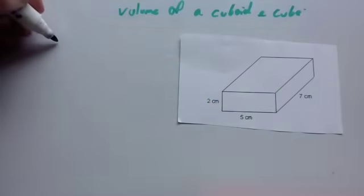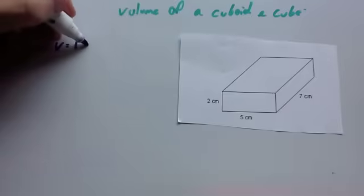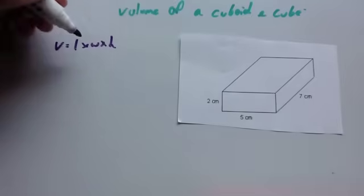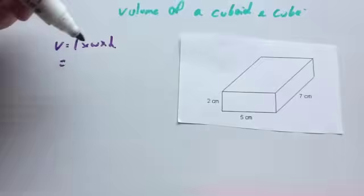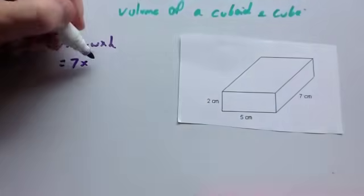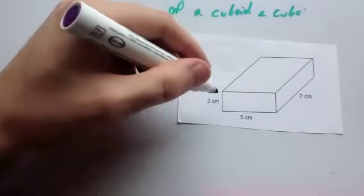To find the volume of a cuboid, volume equals length times width times height. So we're going to do the length, 7, times the width, 5, times the height, 2.